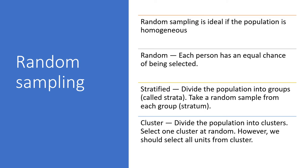Stratified sampling means dividing the population into groups called strata, and collecting samples from each stratum. Cluster sampling means the population is divided into different clusters, and we select one cluster at random but collect all units within that selected cluster. Stratified random sampling and cluster sampling are the most used methods by researchers.